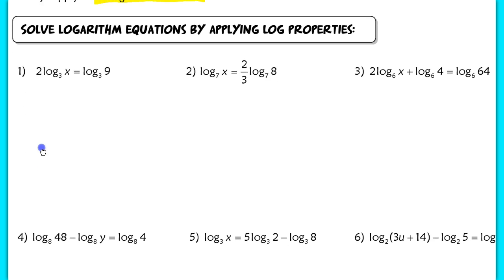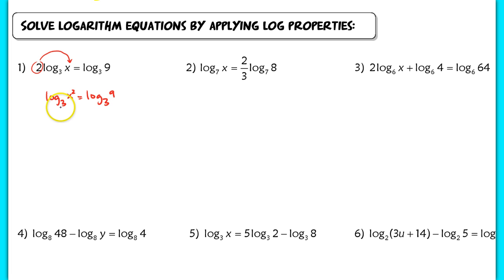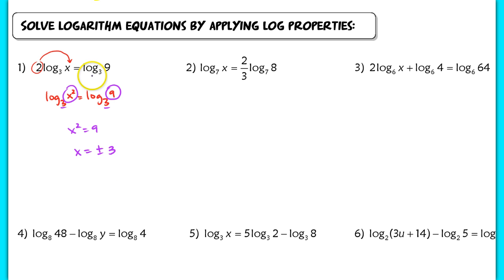In number 1, I want to take that 2 out in front and make it the exponent, giving log base 3 of x² equaling log base 3 of 9. Since both bases are the same, I can equate the arguments: x² equals 9. That gives two solutions, positive or negative 3. Plugging negative 3 back in gives a negative argument, so the only solution is x equals 3.